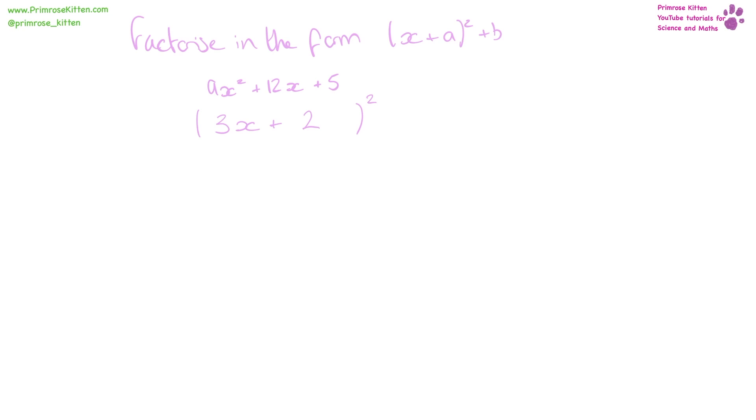And we can check it now to make sure we've got this right. 3x plus 2, 3x plus 2 gives us 9x squared, plus 6x, plus 6x, plus 4. 9x squared, plus 12x, plus 4. So we've got the first part correct.